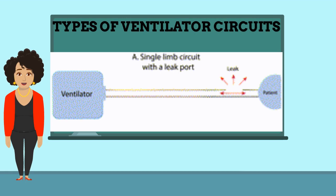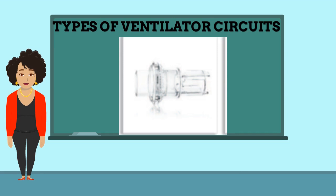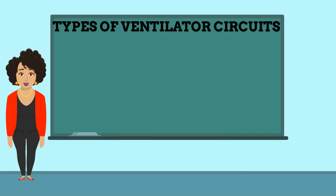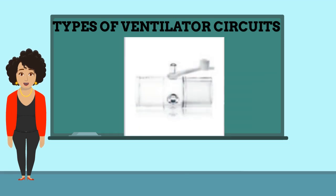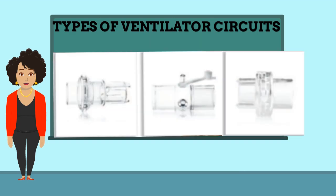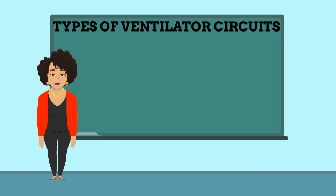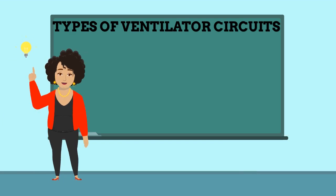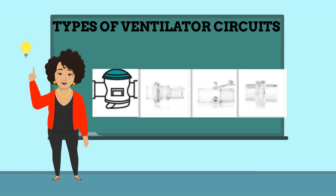A passive circuit has a calibrated intentional leak placed proximal to the patient. The whisper swivel, disposable swivel, and disposable fixed — all of these leak devices are exhalation ports. Now you know that an active or passive circuit has a type of exhalation port.